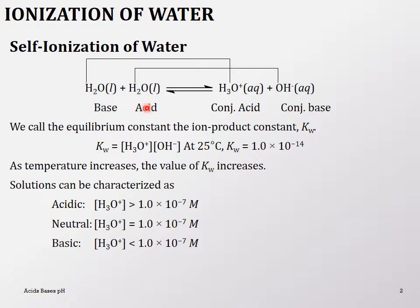It is found that at 25 degrees Celsius, Kw has a value of 1.0 times 10 to the negative 14.